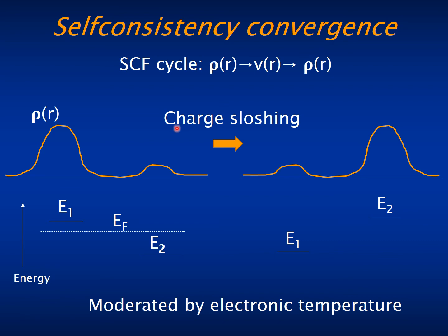The main reason for the divergence of the self-consistency cycle is the phenomenon of charge sloshing. If you have a system composed of two subsystems and most of the charge is in system one, so that the density there is large and the density in the other is small,